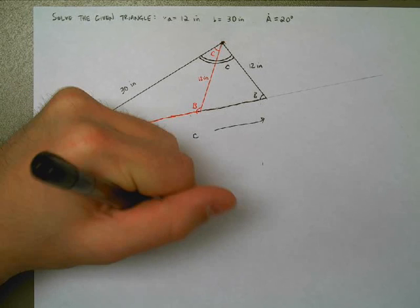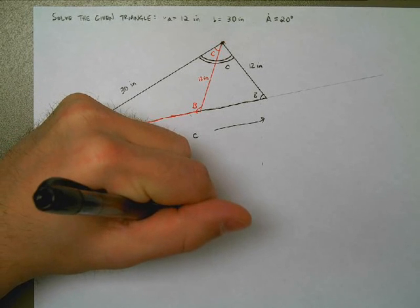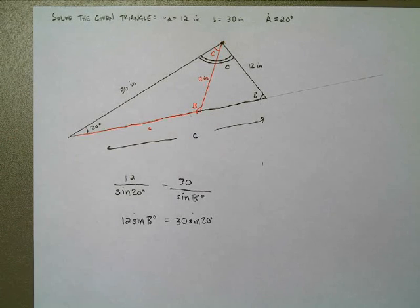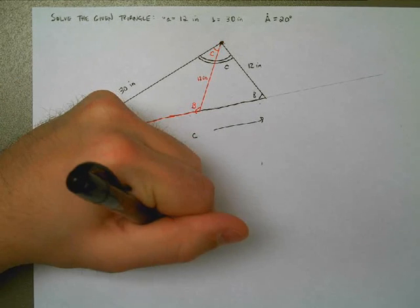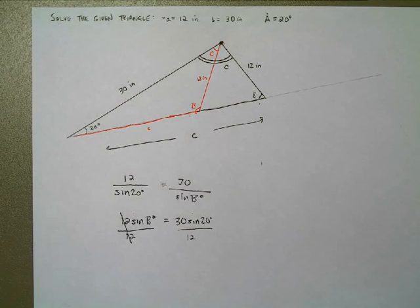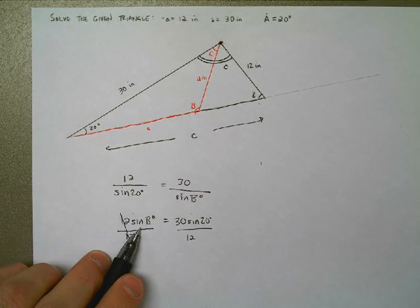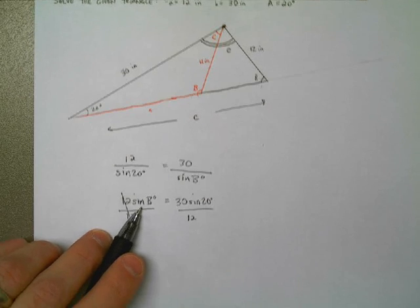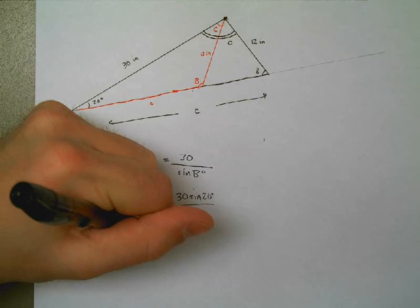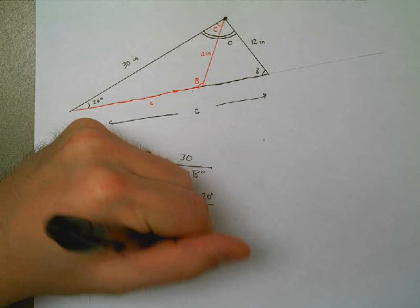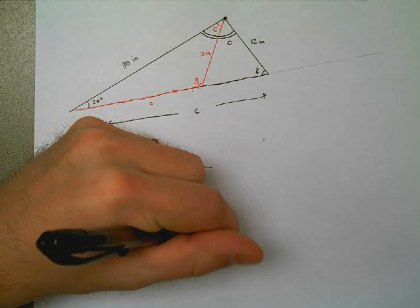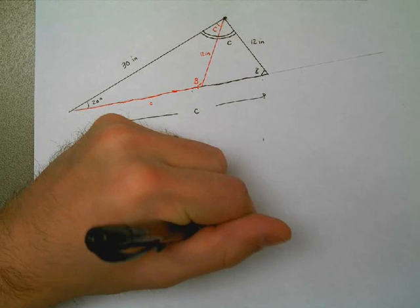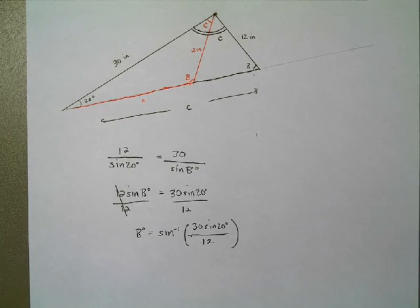Sine up with 12 times the sine of b degrees is equal to 30 times the sine of 20 degrees. To get that sine of b by itself, I'm going to divide both sides by 12. That's rid of that. And that tells us what the sine of b is, but it doesn't tell me what b is, so I need to do arc sine. B is going to be the arc sine of that ratio, that fraction on the right.